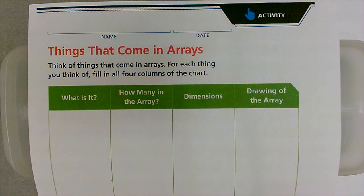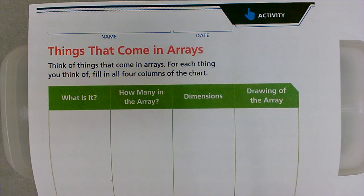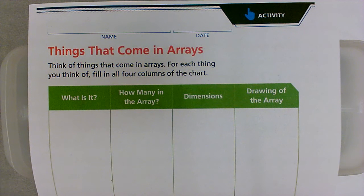Hi. Welcome to Math Class. This is Miss Sandy. This is Activity 2, Things That Come in Arrays. Think of things that come in arrays. For each thing you think of, fill in all four columns of the chart.